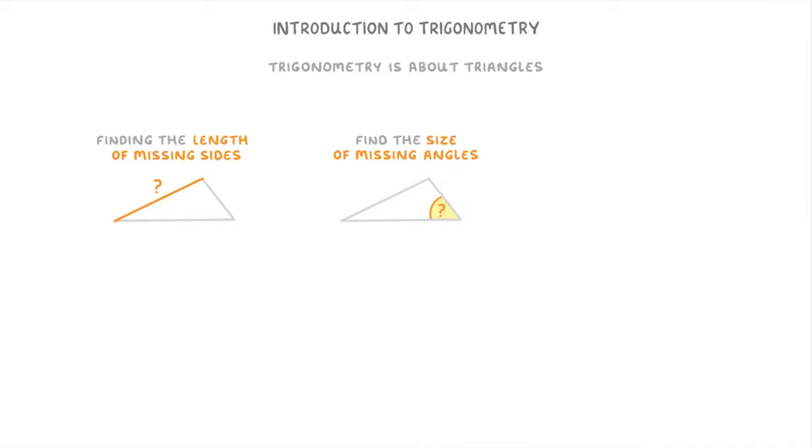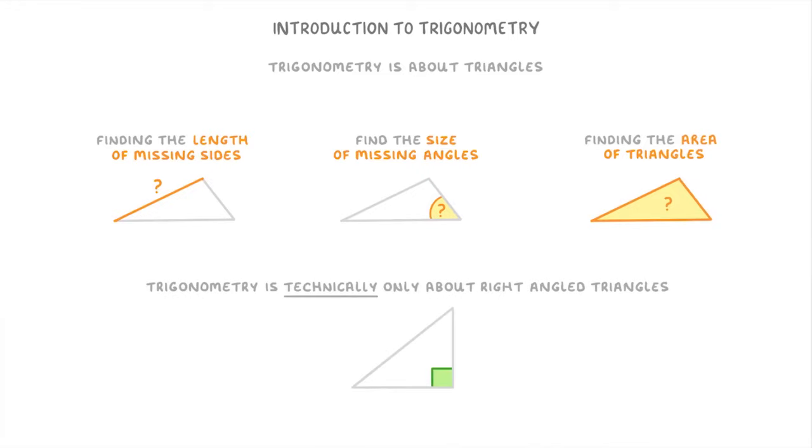...the sizes of missing angles, and the areas of triangles. You might sometimes hear that trigonometry is technically only about right angle triangles, but in real life we often use it as a catch-all term for any calculation with triangles.